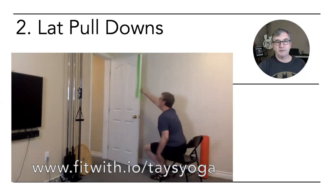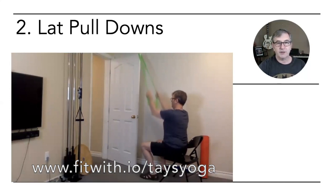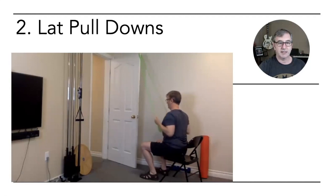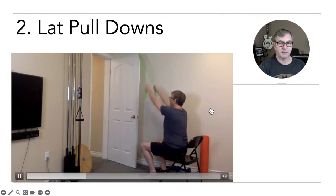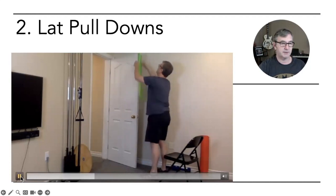So lat pulldowns, you can do this with TheraBand quite easily. I've got a rubber band with an Allen wrench in the top of the door. You can hook it around that and draw down towards your sides with your elbows. So the lat pulldown will get that large back muscle. It's really important for posture and spinal support. A lot of people with back pain will get relief of symptoms if they strengthen these. So lat pulldowns.